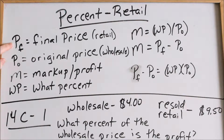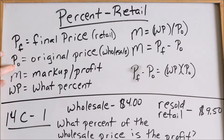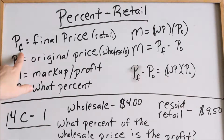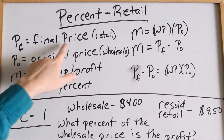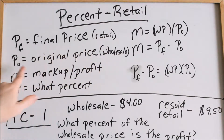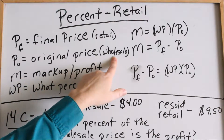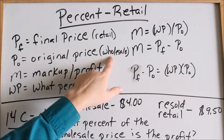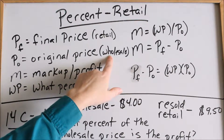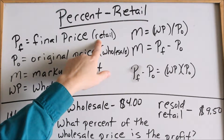Here are some symbols I'm going to use. This is a P with a subscript of F. We use subscripts because I have a P and a P, and the subscripts just give a distinction to each — it doesn't have anything to do with the calculations, it's just a label. P sub F stands for the final price of an item, or the retail price. P sub O stands for the original price, which is the same as the wholesale price. You go into a furniture store — they bought it at wholesale price, then marked it up and sell it to you at retail price.